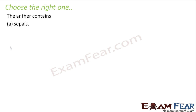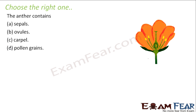The anther contains: sepals, ovules, carpel, or pollen grains? If you look at the structure of the flower, this is the anther — this yellow colored structure. It is a part of the male reproductive organ; the anther is a part of the stamen. So the anther contains the male sex cells in the flower, which are the pollen grains. Sepals are the green colored structures which ensure protection. The ovule is a small structure inside the ovary. And this entire female reproductive part of the flower is the carpel.